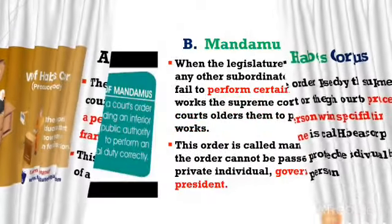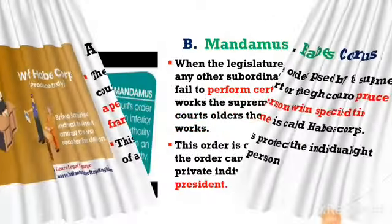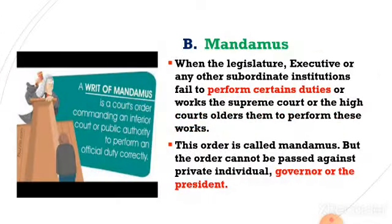The second remedy is mandamus. According to mandamus, when organs of government like the legislature, executive, or other lower institutions fail to perform their duties, the Supreme Court or High Court passes an order to perform their works — this is called mandamus. However, this writ is not passed against the governor or president. When the governor or president goes against the constitution, they are removed by parliament members through a special procedure called the motion of impeachment.